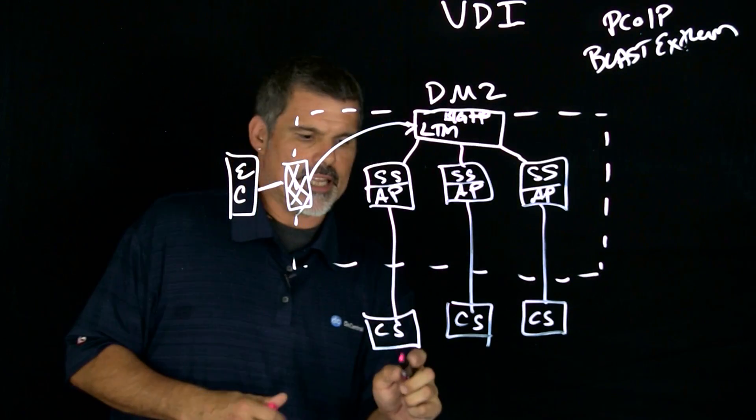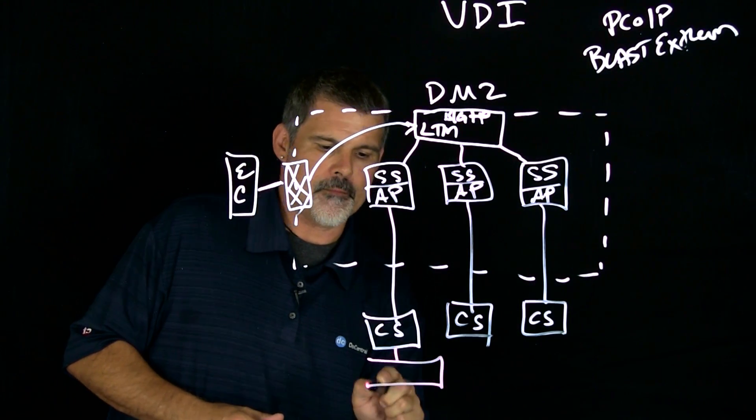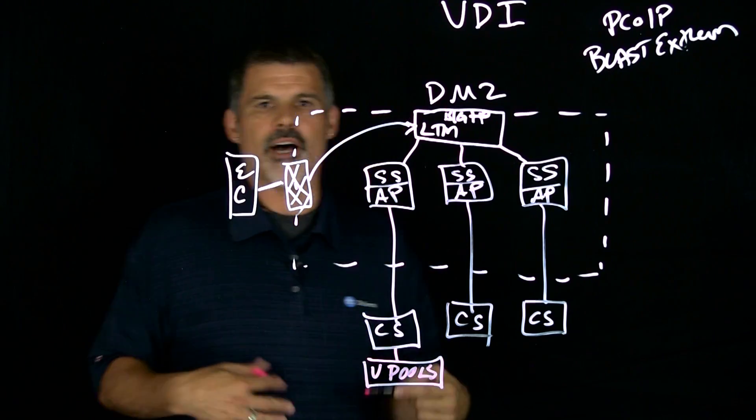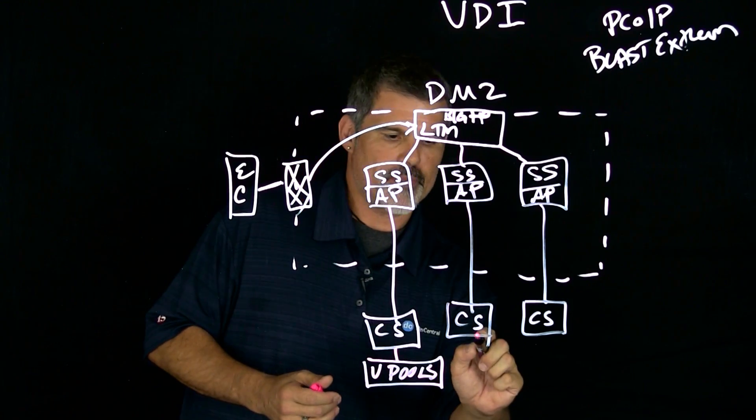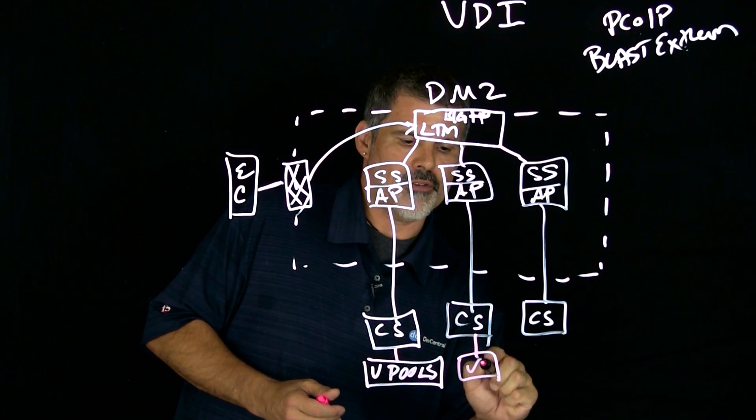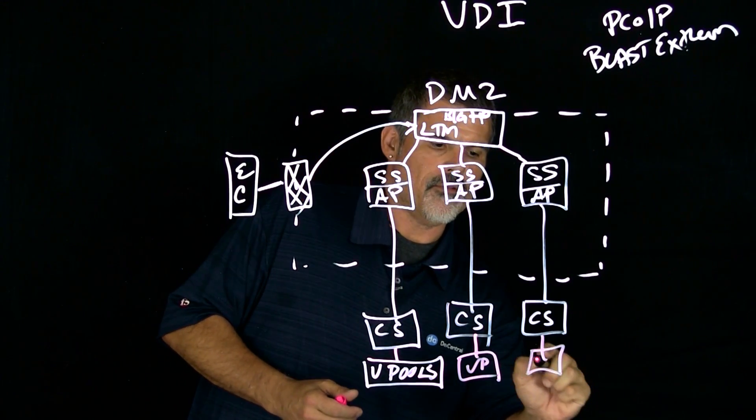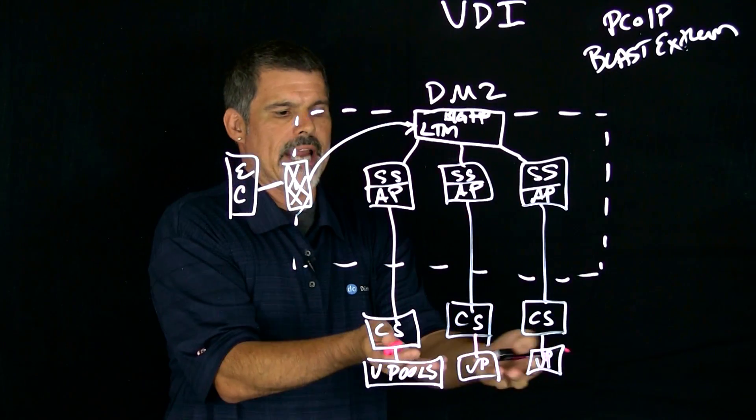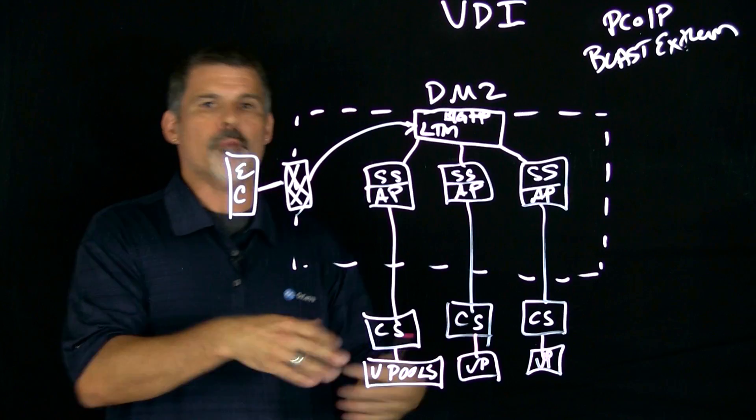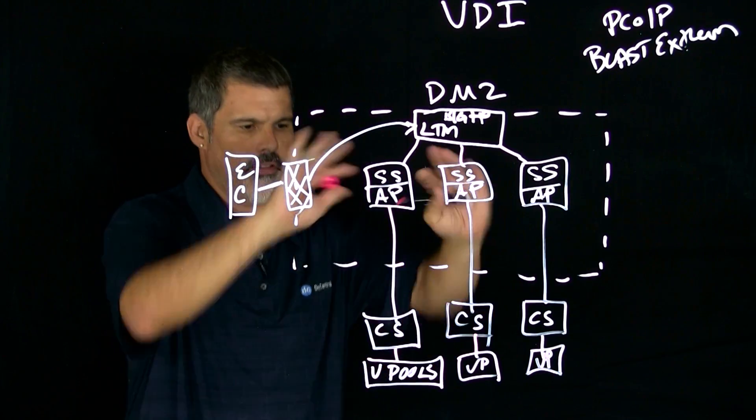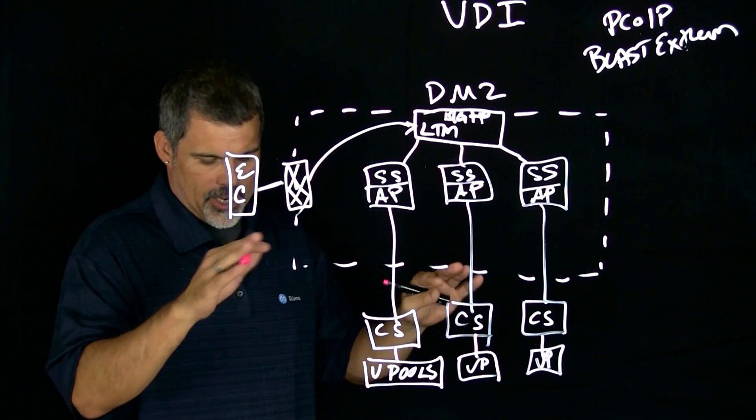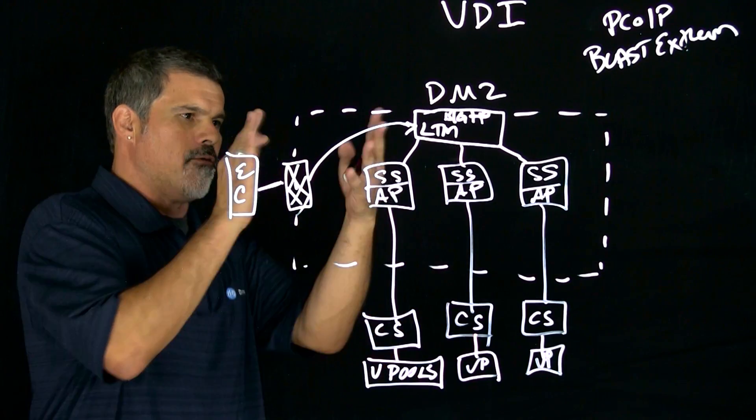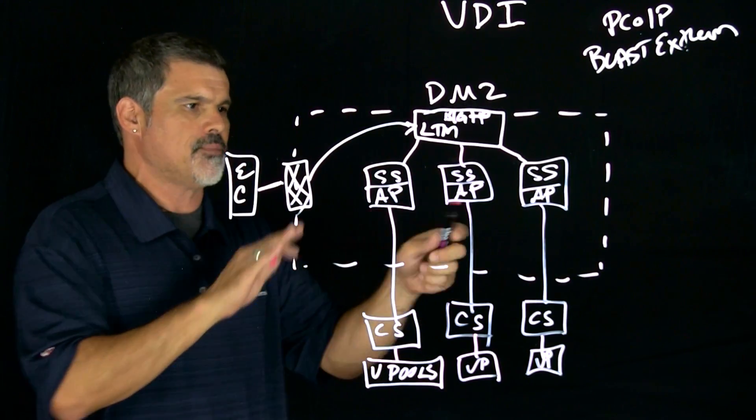And then underneath the connection servers would be your view pools, the desktop pools. Now from a physical standpoint, all of this right here would be your view pod. That would include all the pieces here physically, probably on a singular device and ESXi host. But logically, obviously we're separating them.